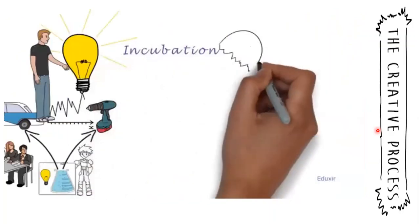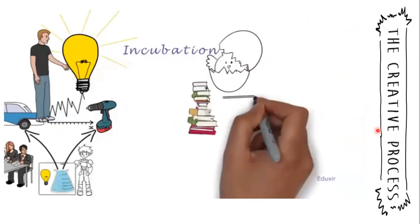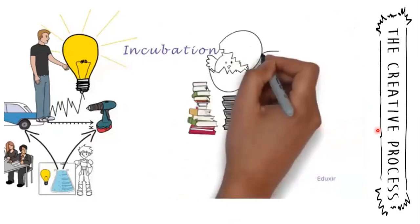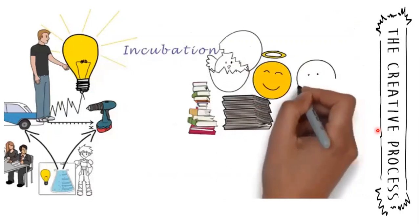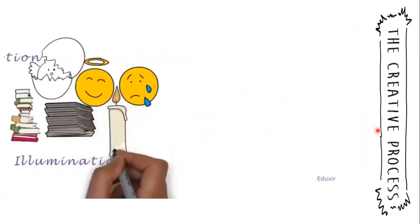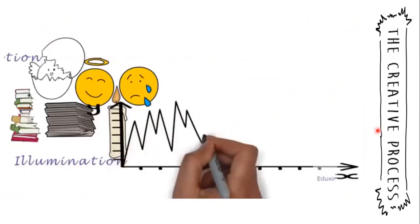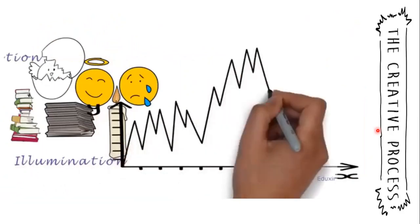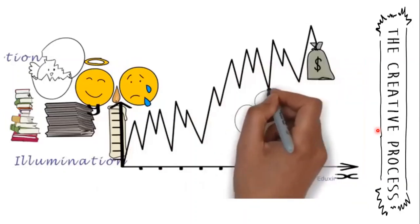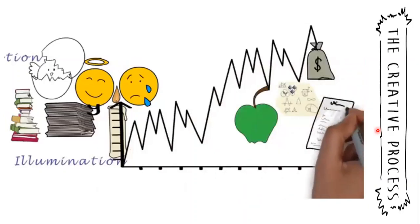Incubation: in this phase, all the required information is gathered from various resources. The information is analyzed to evaluate various pros and cons of implementing the idea. Illumination: in this phase, a detailed plan to implement the idea is laid out. The entrepreneur will start accumulating the capital, procuring the raw material, laying out the process, deciding the policy, etc.